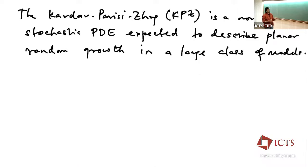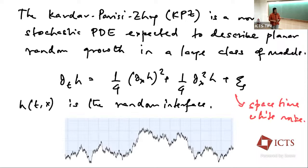One of the key curves we will focus on is given by the solution to this stochastic PDE known as the Kardar-Parisi-Zhang equation. It's a nonlinear stochastic PDE which is supposed to describe planar random growth in a large class of models. It's not super important to know the exact form, but you should think of H as this randomly growing curve, where x is a spatial coordinate — one dimensional — and T is the time coordinate.